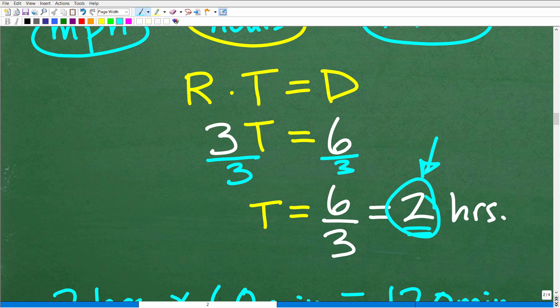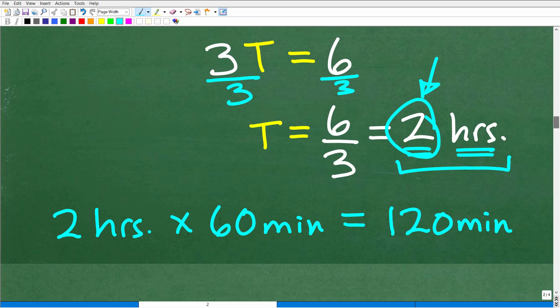If you answered 2, you were close, but that is in hours. It took her 2 hours to walk 6 miles going 3 miles per hour. But the question asks how many minutes. To convert from hours to minutes, one hour equals 60 minutes. So take our hours and multiply by 60. 2 times 60 is 120 minutes.